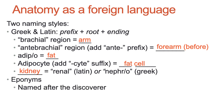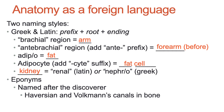Another naming style is eponyms, which are named after the discoverer — a structure or part named after the scientist or doctor who discovered it. These are not particularly helpful. Examples include the Haversian canal, the Volkmann's canal, which are in bone, and the Eustachian tube, found in ears. Terms from Greek and Latin are typically more helpful, and we are working on replacing many eponyms with more meaningful terms.